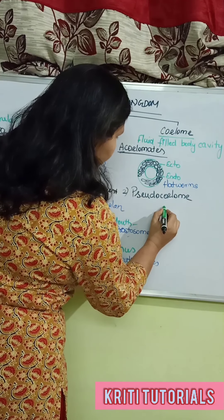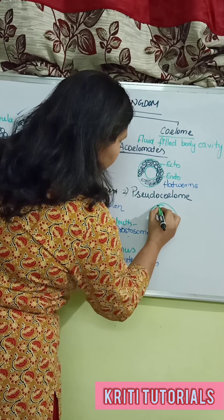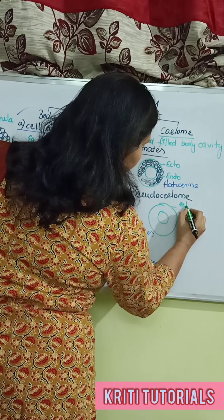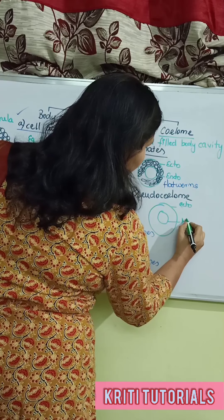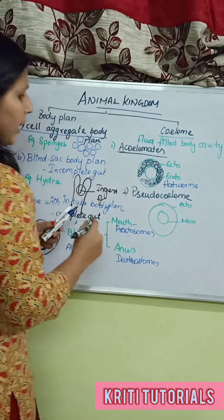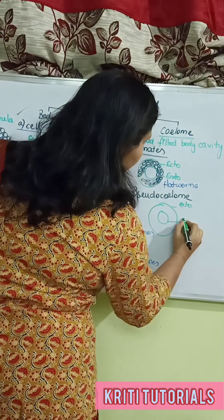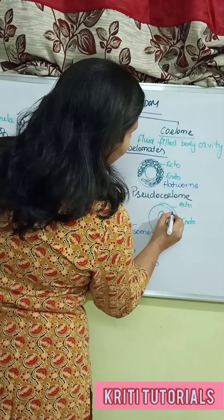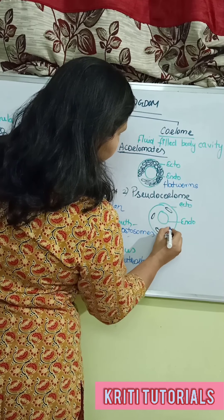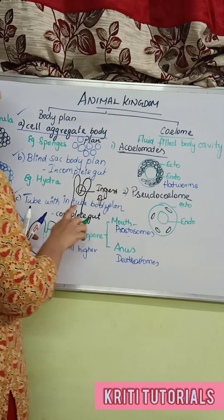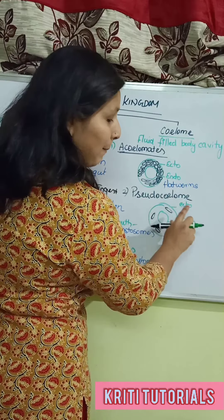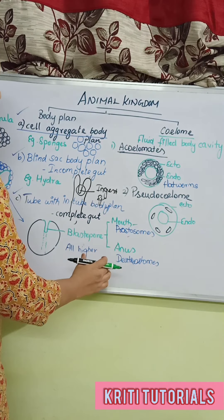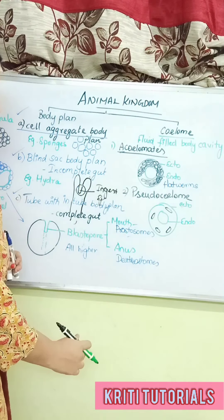In the pseudocoelom diagram, there is the outer ectoderm, inner endoderm, but the mesodermal layer is scattered here and there — the middle mesodermal layer is not completely formed. Such a condition is called pseudocoelomate.